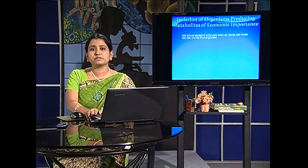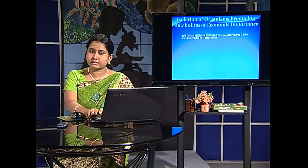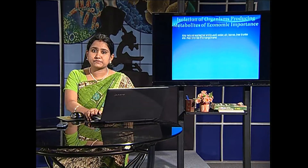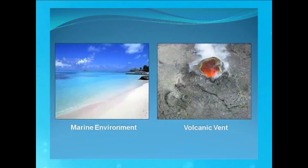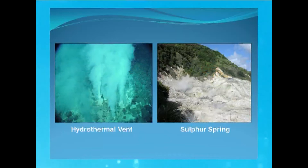We come to the sources from where microbes can be isolated. Microbes can be isolated from any natural entities — it can be soil or any water body, tree leaves or tree trunk, a marine environment or a volcanic vent, or other extreme environments such as a hydrothermal vent present at the seabed or a sulphur spring.